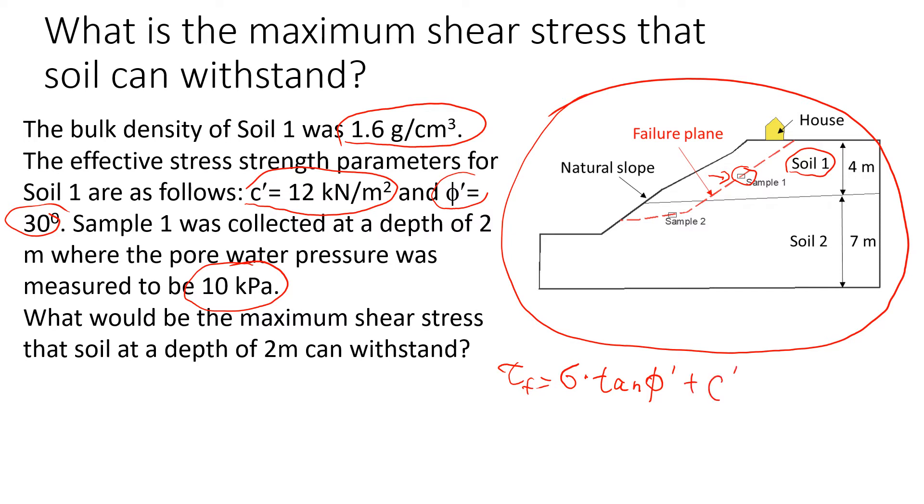What is missing is the normal stress. Once we know this Mohr-Coulomb failure criteria, it gives us the maximum shear stress that soil can withstand. We're already given the friction angle and cohesion. Because we have effective stress conditions, we need to change our normal stress to effective normal stress.